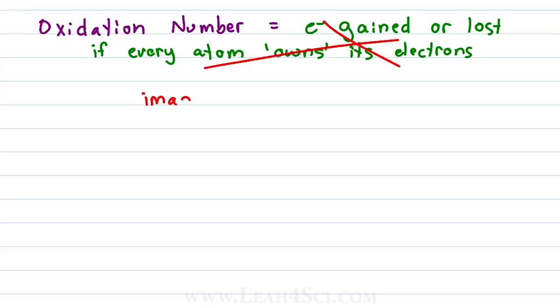I like to think of oxidation number as the imaginary charge of every atom. This is slightly similar to formal charge which we covered in organic chemistry, and this will help us later when we're trying to figure out if an atom got oxidized or reduced.